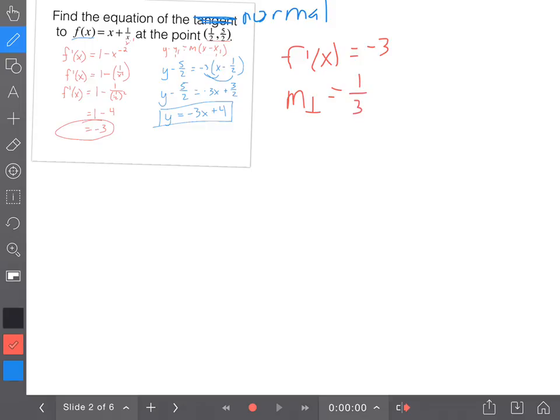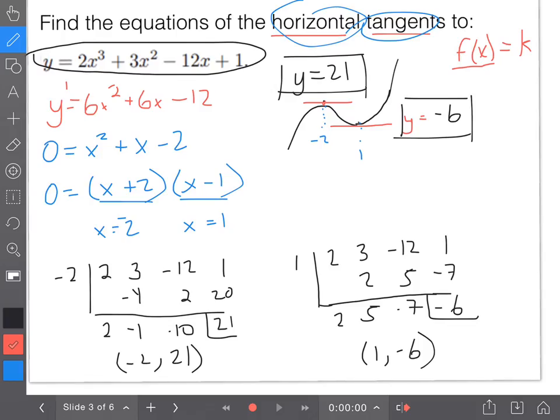So m of the normal or the perpendicular slope is going to be negative, which will make it positive, and then flip it, so that'll be 1/3. Now you write the exact same equation you did before: y - y₁, which is 5/2, equals the slope 1/3 times (x - 1/2). Everything else is exactly the same.